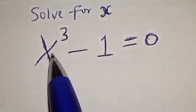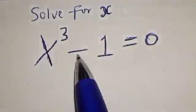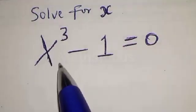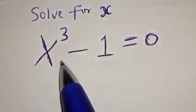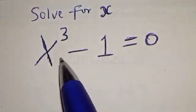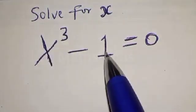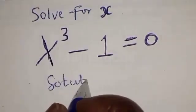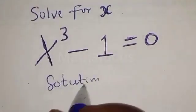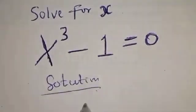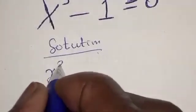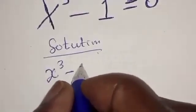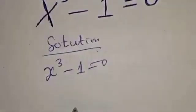Solve for X. X raised to the power 3 minus 1 is equal to 0. So we want to find the value of X from this given equation: X cubed minus 1 is equal to 0.